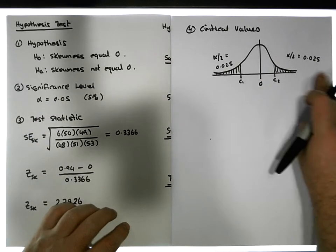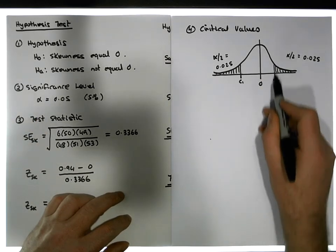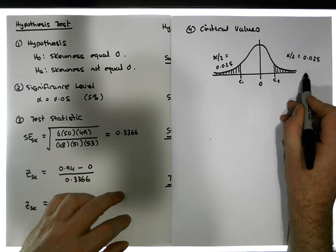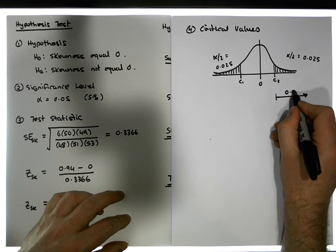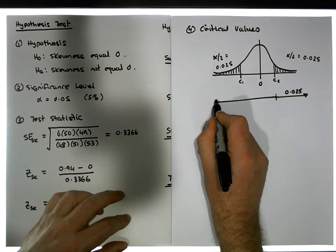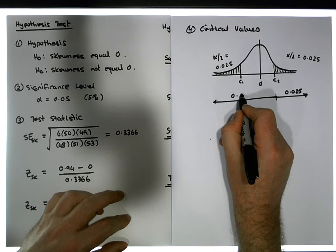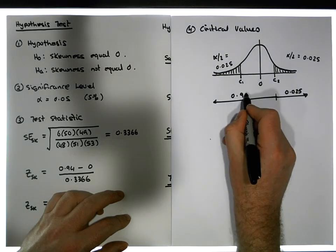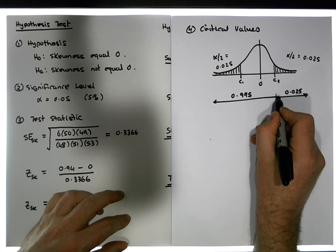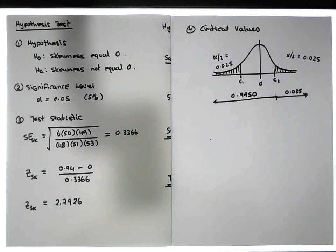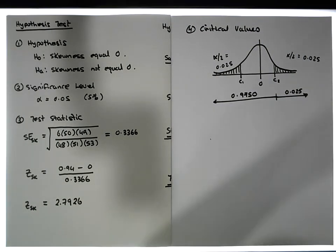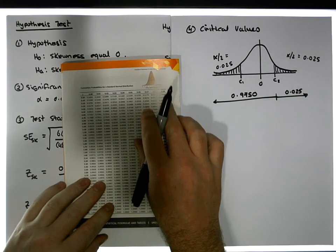Based on the normal distribution, what z-score has 0.025 of the area to the right? That means 0.975 of the area is to the left. We can look this up on our z-tables — these are cumulative z-tables.